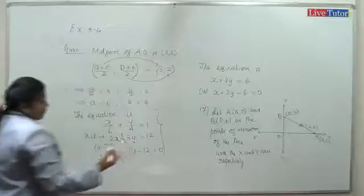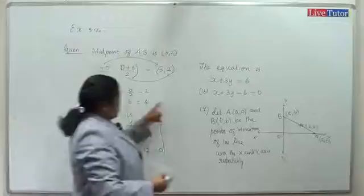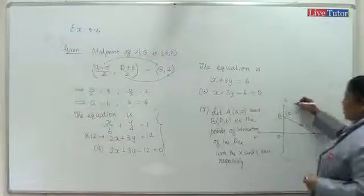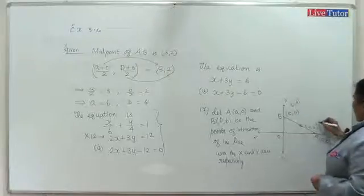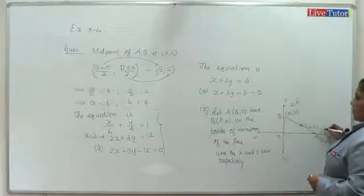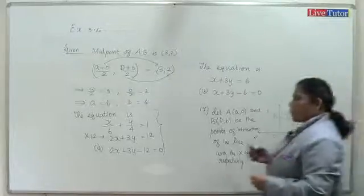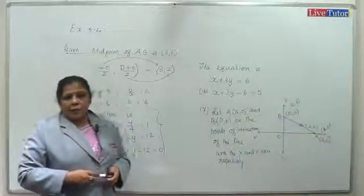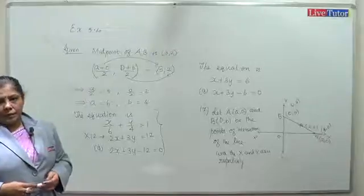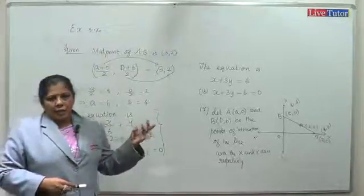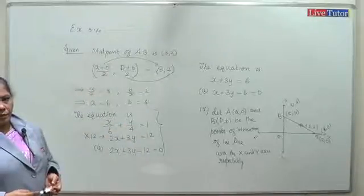Alternatively, you can use the two-point form. A is actually (6, 0) and B is (0, 4). Since the line passes through A, midpoint M (3,2), and B, you can write the equation using the two-point formula.